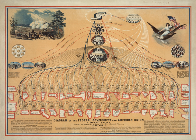The Judiciary explains and applies the laws. This branch does this by hearing and eventually making decisions on various legal cases. Article III Section I of the Constitution establishes the Supreme Court of the United States and authorizes the United States Congress to establish inferior courts as their need shall arise. Section I also establishes a lifetime tenure for all federal judges and states that their compensation may not be diminished during their time in office. Article II Section II establishes that all federal judges are to be appointed by the President and confirmed by the United States Senate.